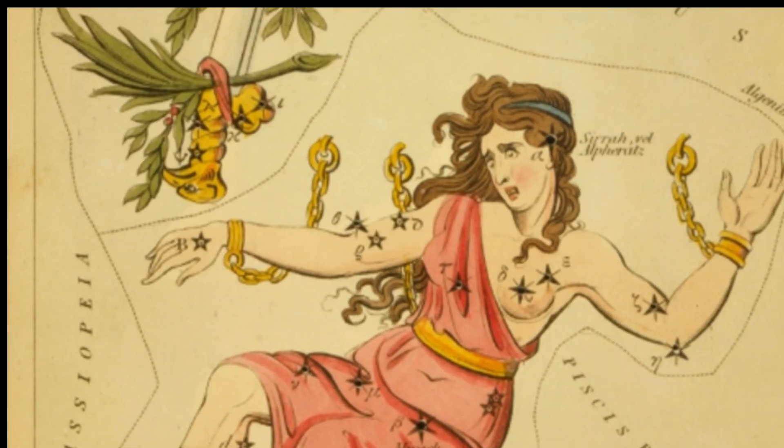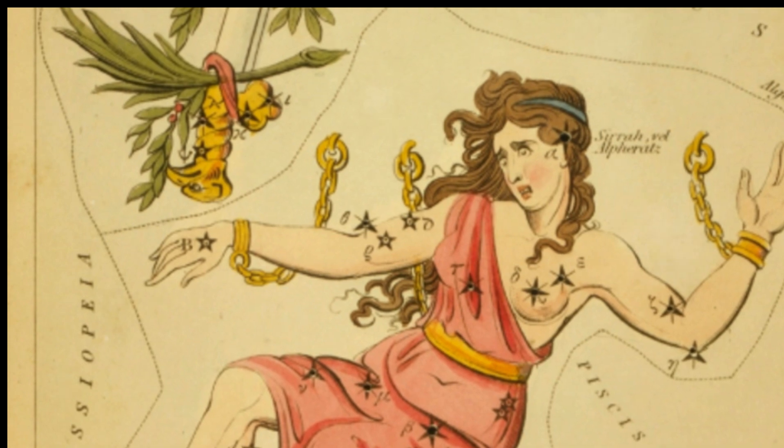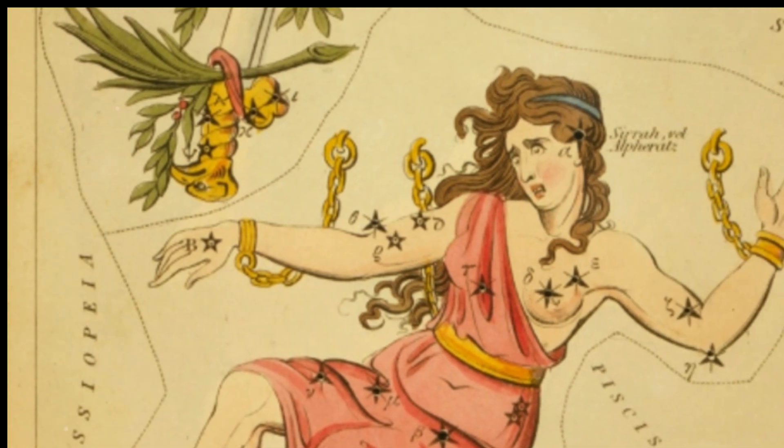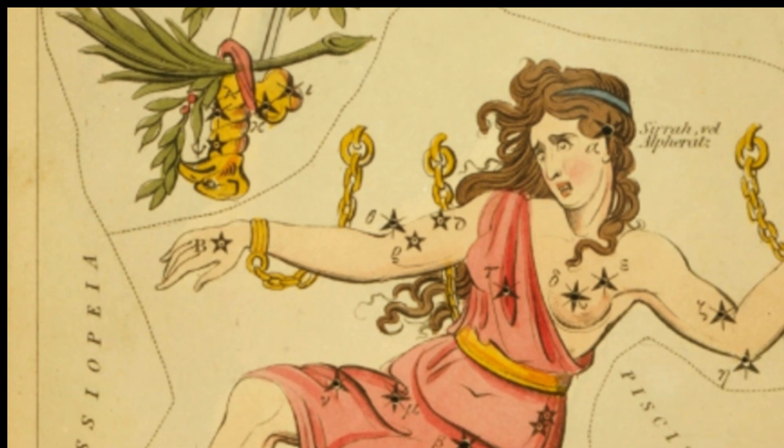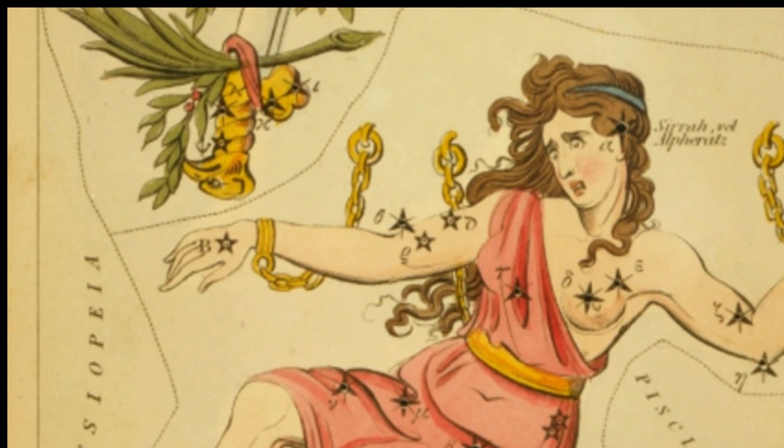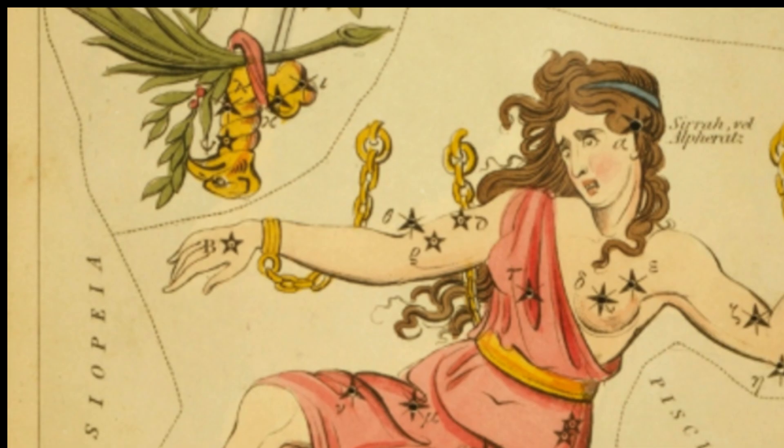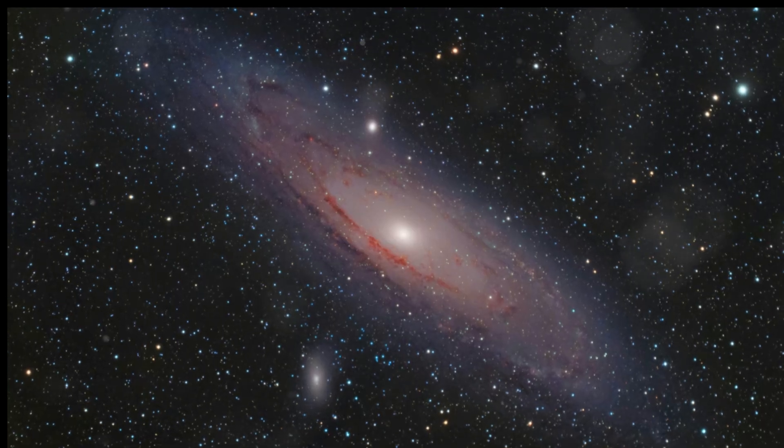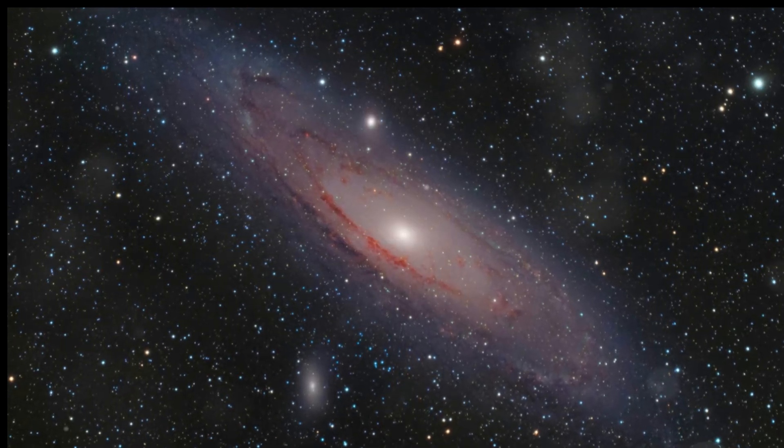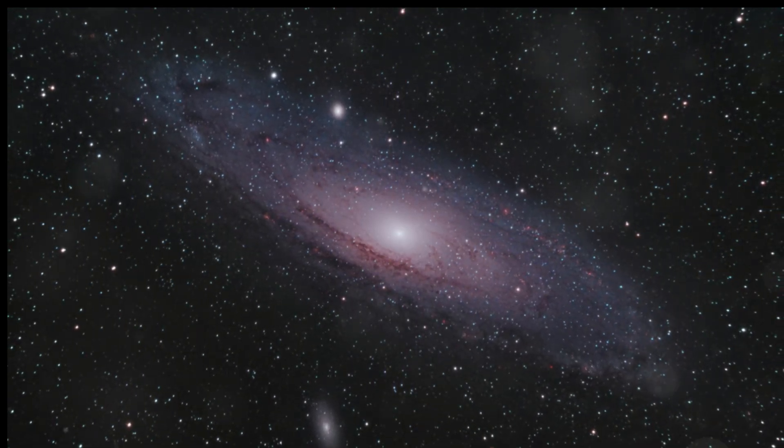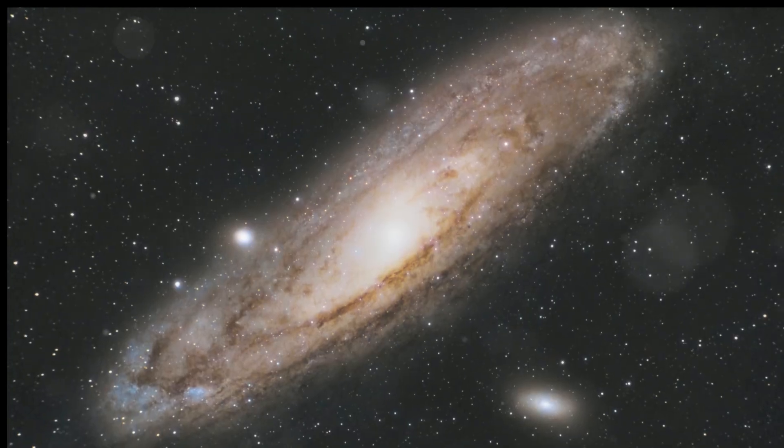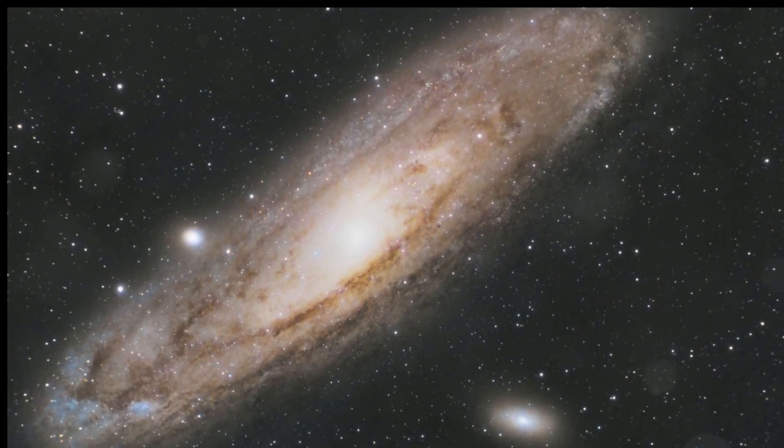Named after a princess in Greek mythology, Andromeda holds a special place in our understanding of the universe. The story of Andromeda the princess is one of beauty and resilience, much like the galaxy that bears her name. The Andromeda galaxy has been a beacon of hope and discovery for astronomers, guiding us toward a deeper understanding of the cosmos.